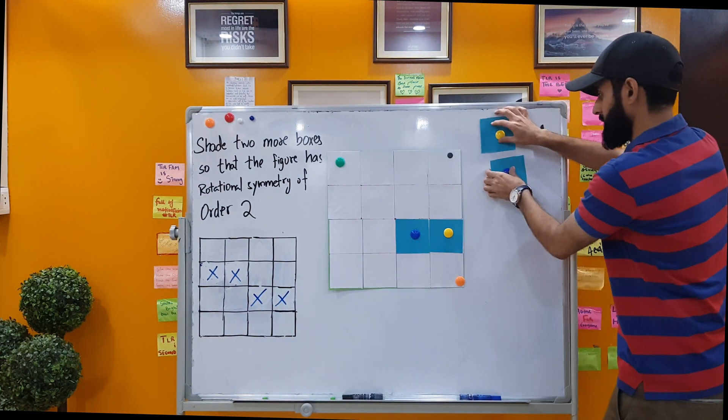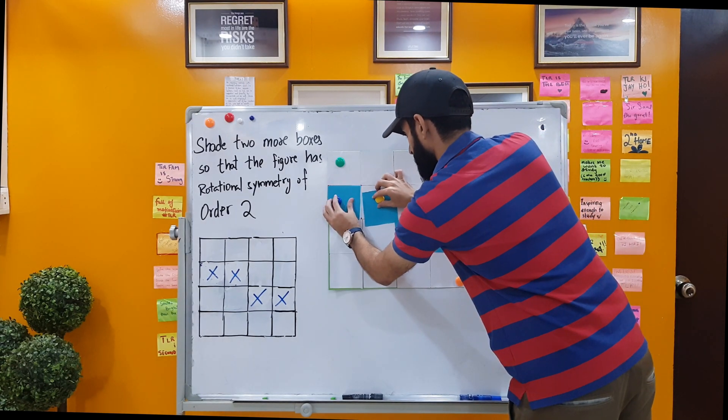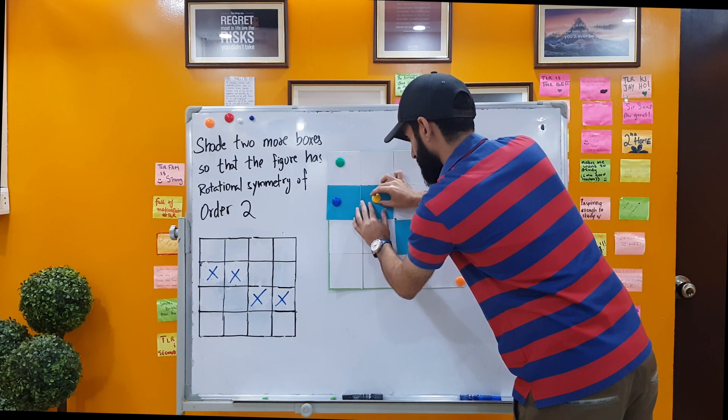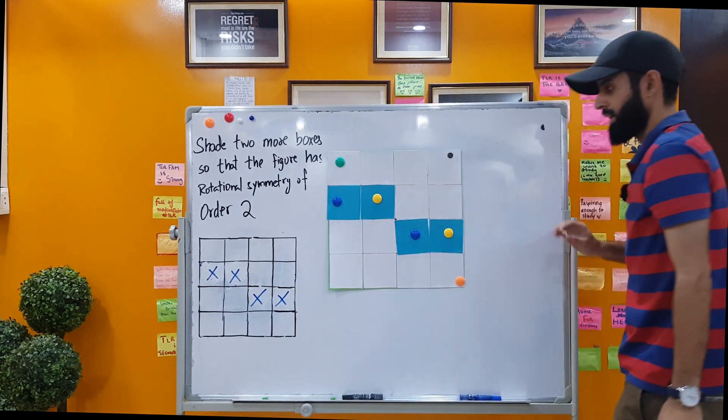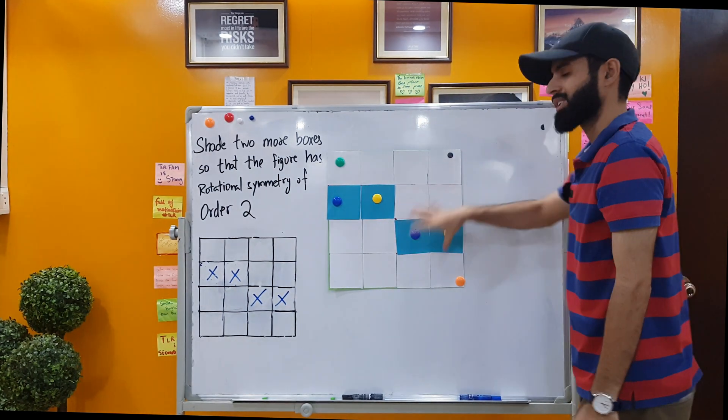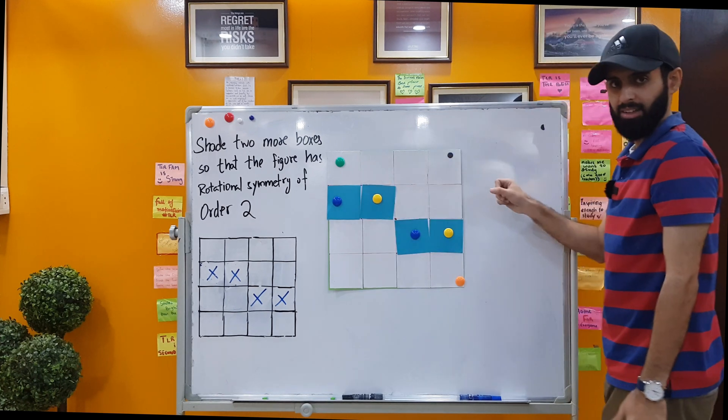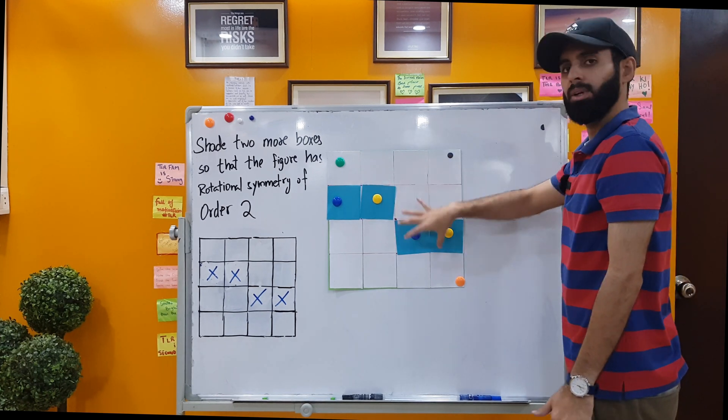So there you go. Once we've done this, let's just put these squares here. Now you can see that this shape is going to have rotational symmetry of order 2. Why? Because once I rotate this shape 180 degrees we will be able to get the exact same shape.